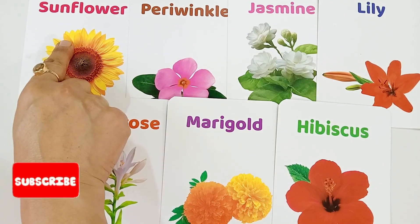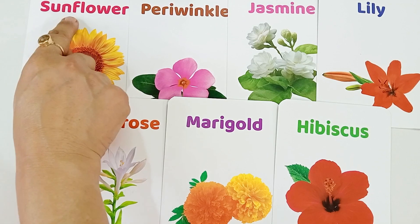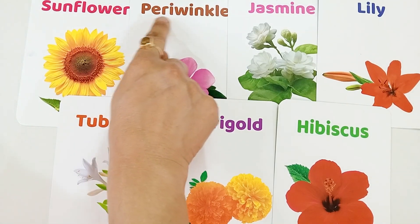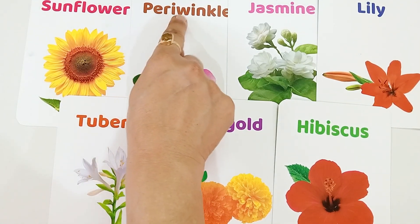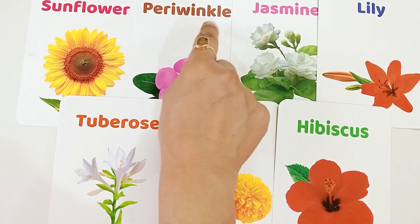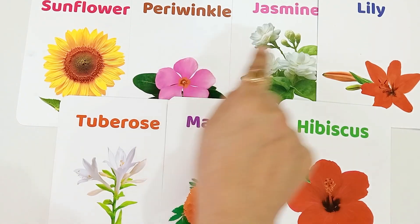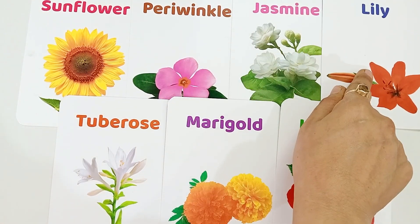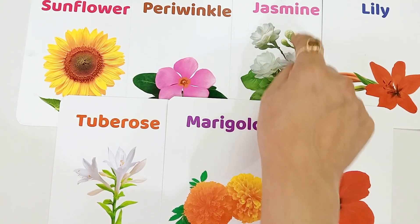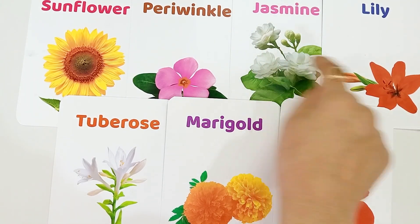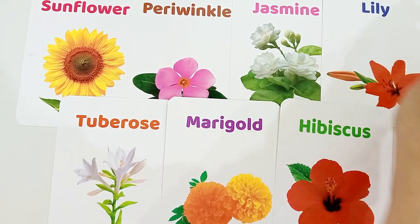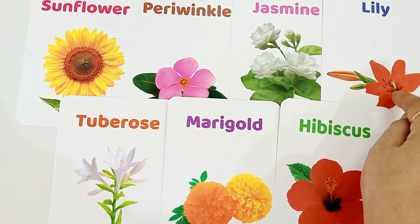S for Sunflower, S-U-N-F-L-O-W-R, Sunflower. P for Periwinkle, P-E-R-I-W-I-N-K-L-E, Periwinkle. This is Periwinkle. J for Jasmine, J-S-M-I-N-E, Jasmine. This is Jasmine. L for Lily, L-I-L-Y, Lily. This is Lily.